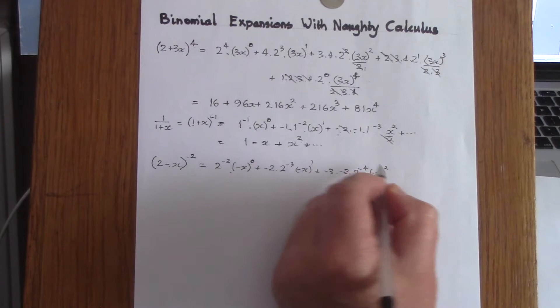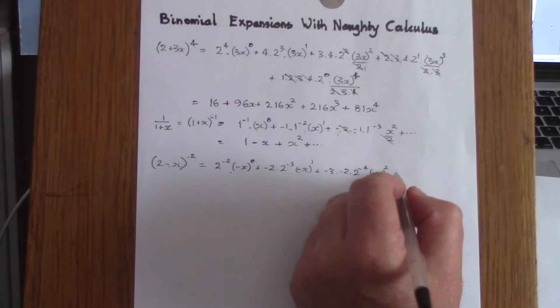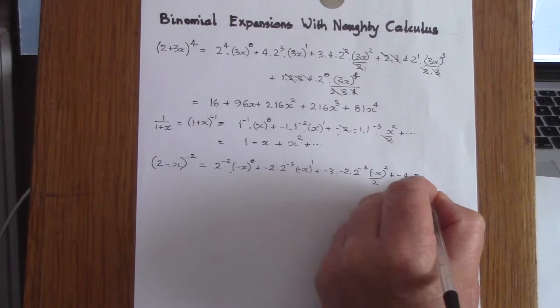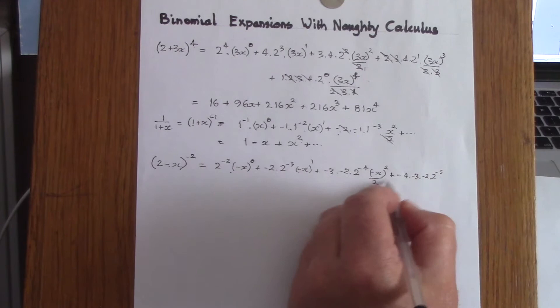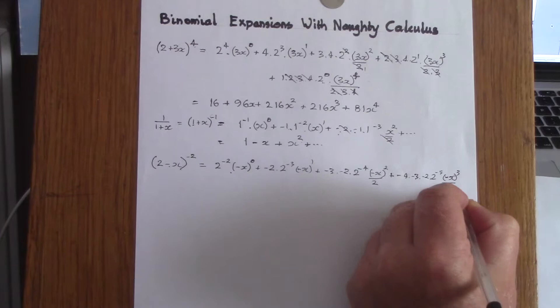Integrating gives minus x squared over 2. One more time: differentiating gives minus 4 times minus 3 times minus 2 times 2 to the power of minus 5, and integrating gives minus x cubed over 2 times 3. Then we simplify.